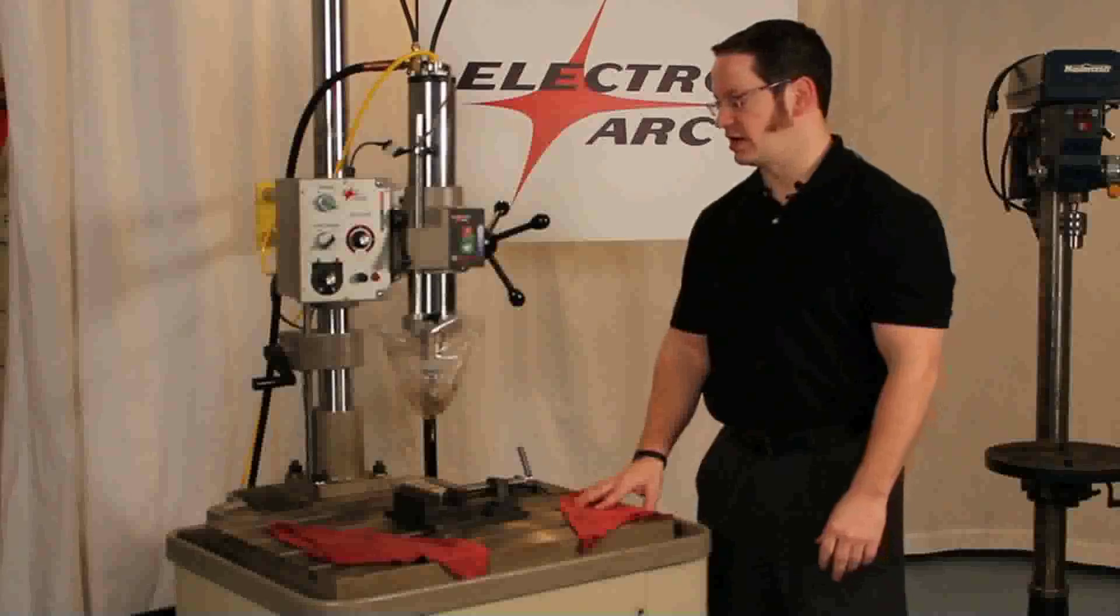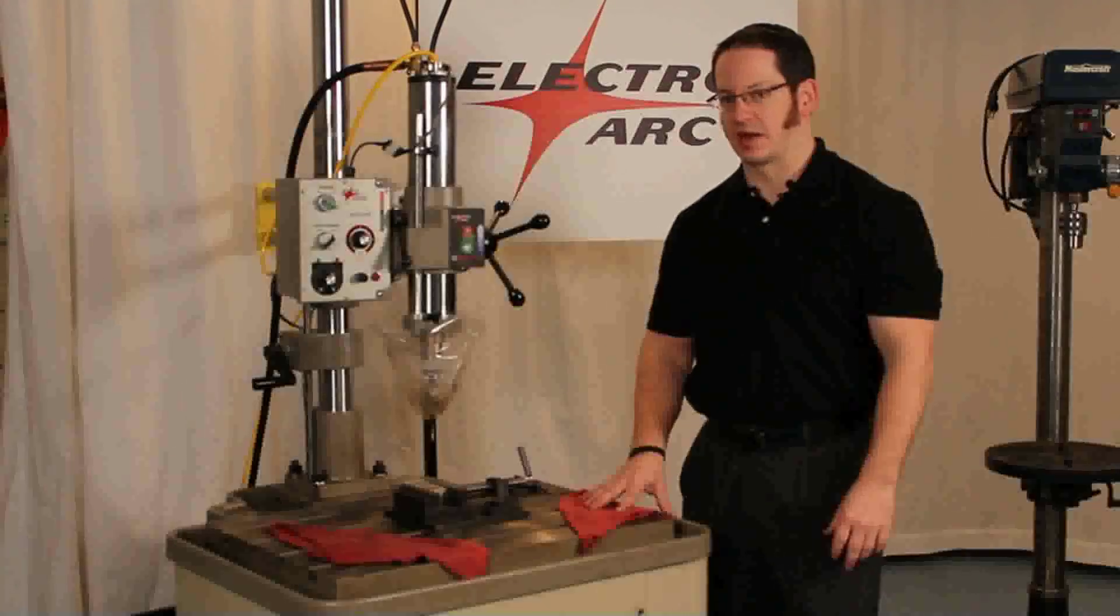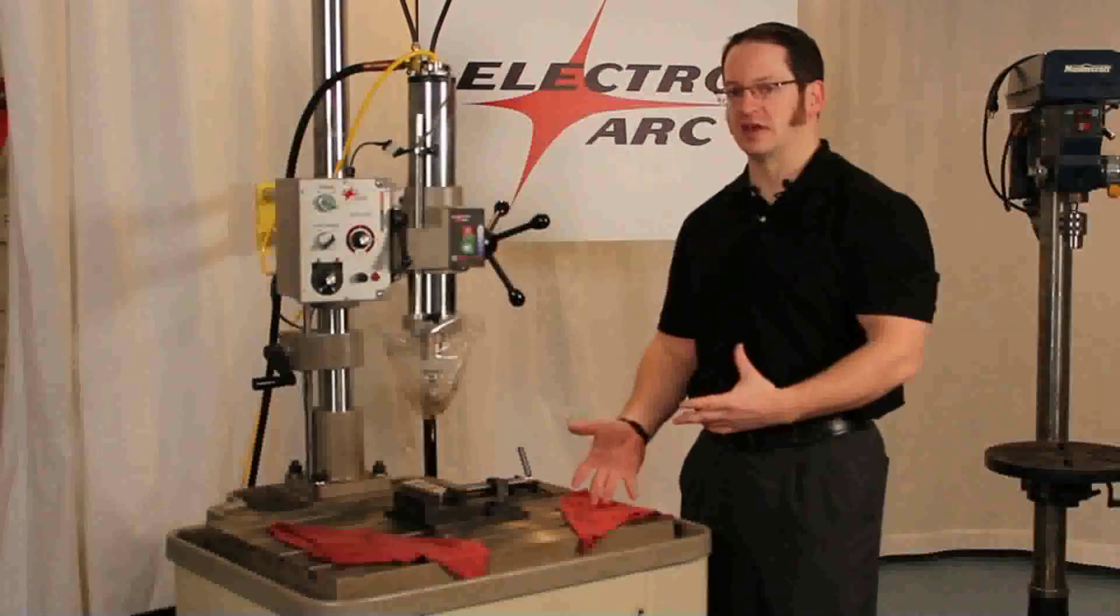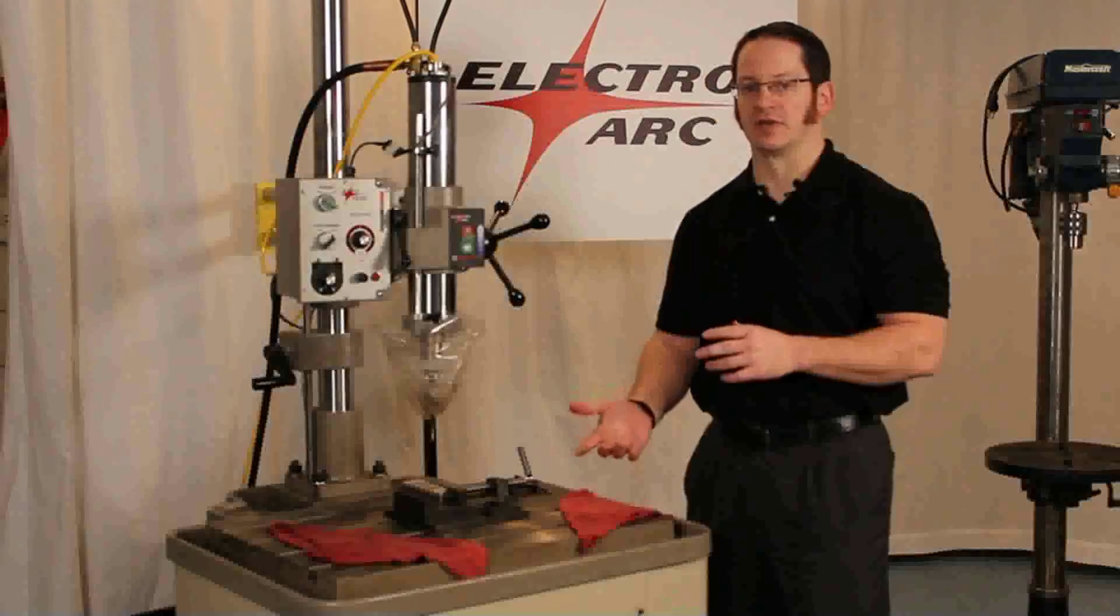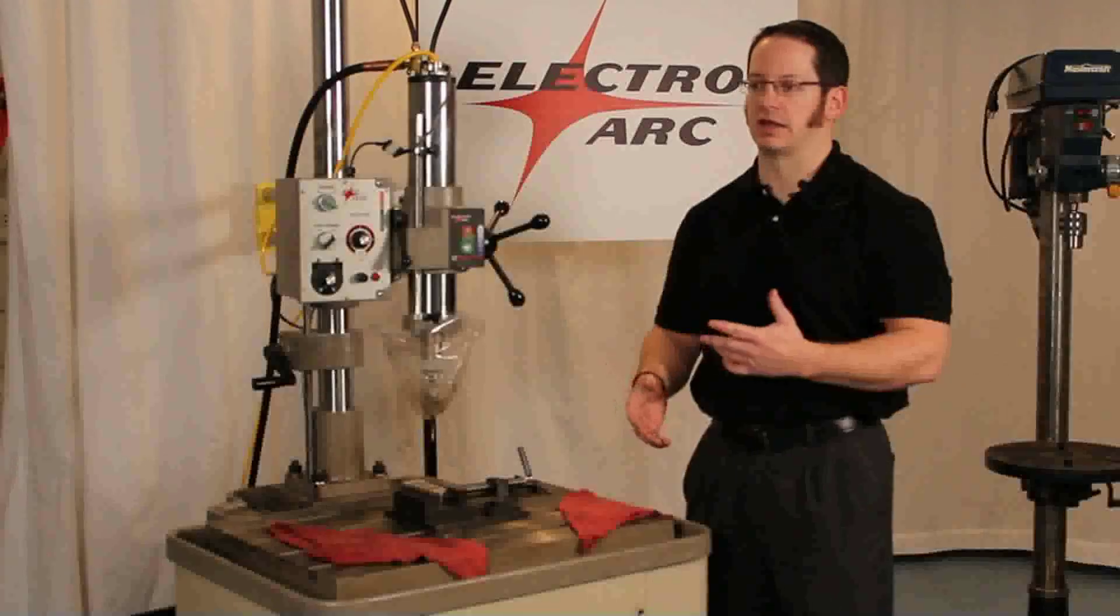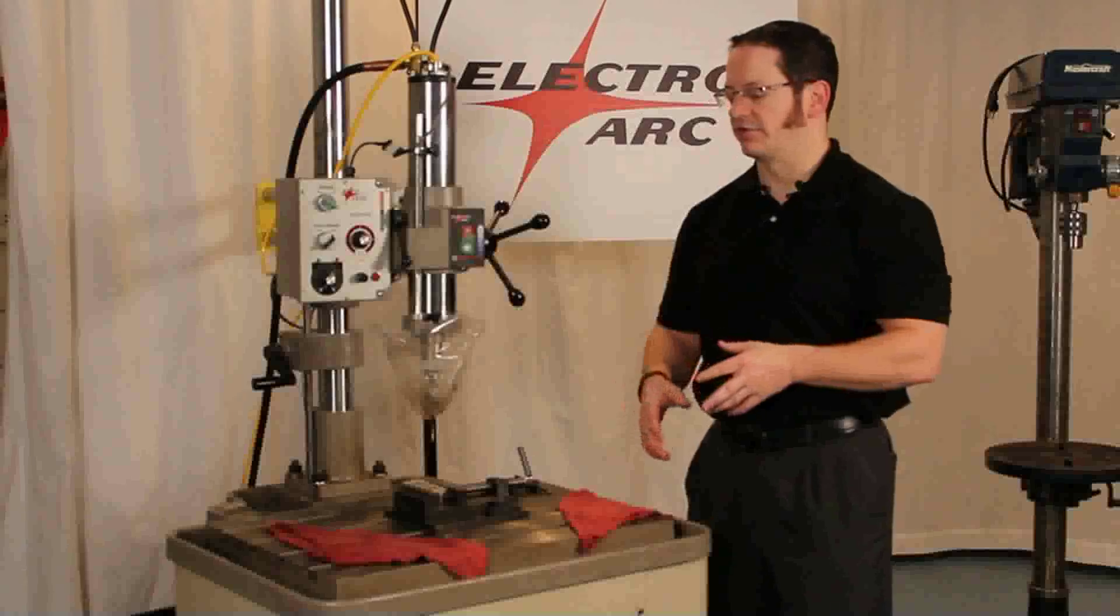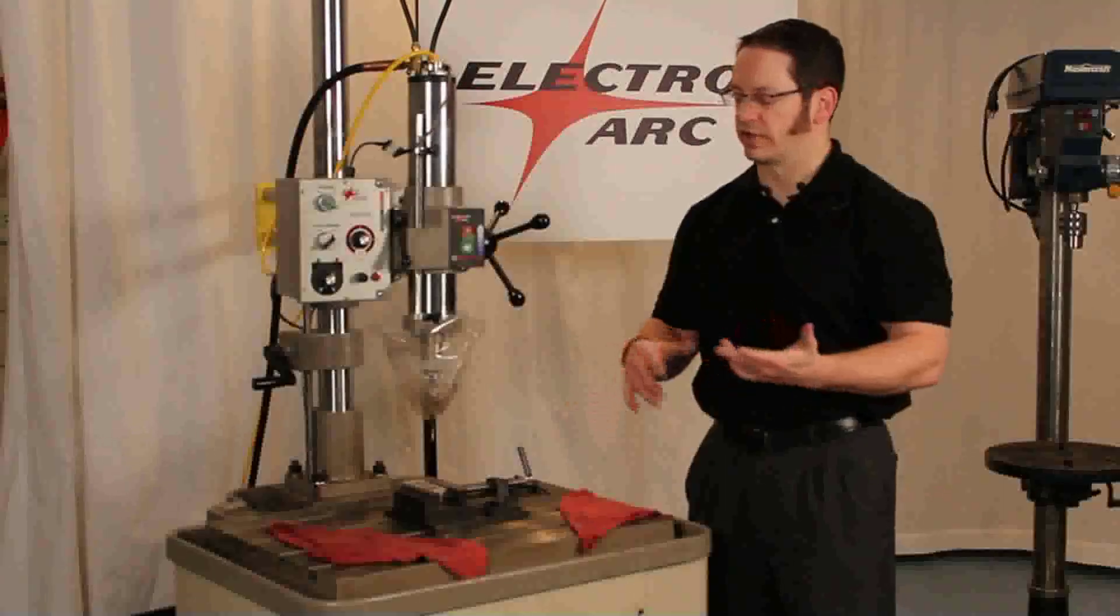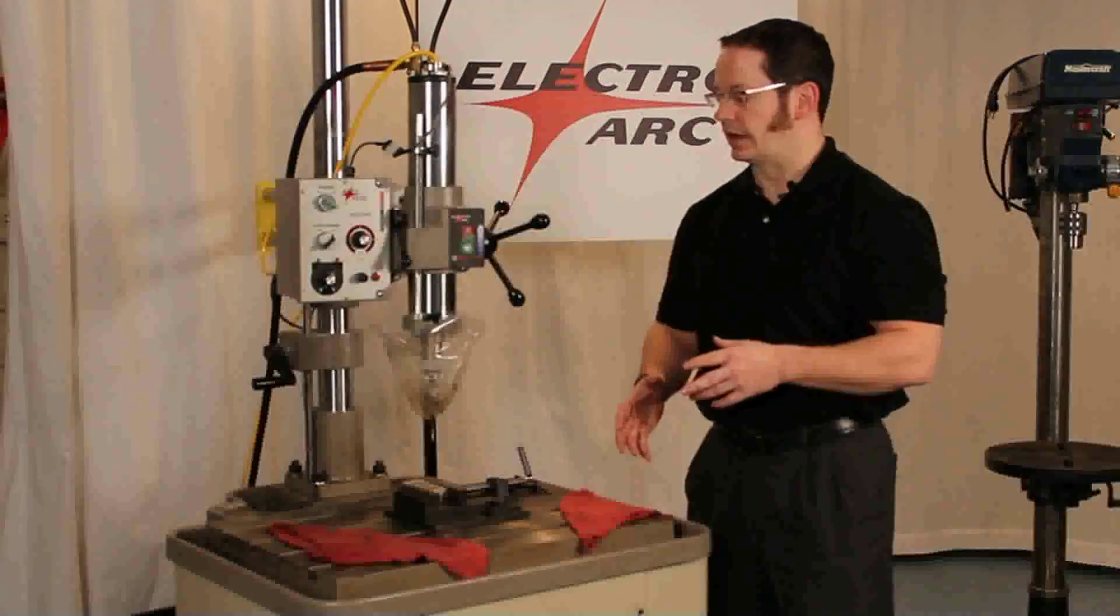So what we have here today, this is one of our tabletop machines. This is in our tap zapper line. This machine has an AC output for the power supply. We also make models that use a DC output and the main difference is just going to be dependent on how much carbide you have to remove. If you have an abundance of carbide tooling we might guide you a little bit more toward a DC model over the AC just because they're slightly more efficient on the carbide tooling.